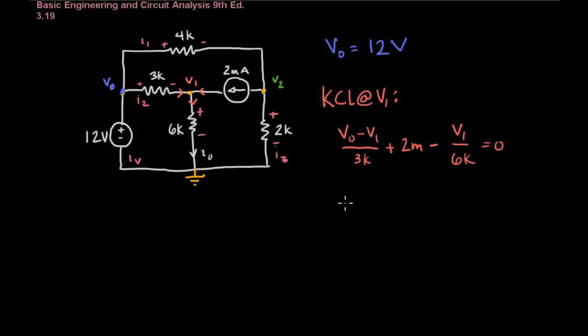Now let's put this into standard form. So I have a common denominator of 6K so I'm going to put everything under a common denominator or put these two terms here under common denominators and then multiply through by 6K. So I get 2V0 minus 2V1, 6K times 2M equals 12 minus V1 equals zero. Now let's combine our terms and simplify. 2V0 minus 3V1 is equal to negative 12. And that is our first standard form KCL equation.